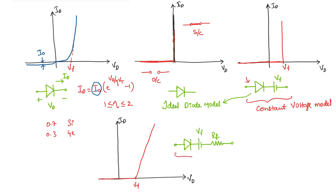This model is called piecewise linear model. So when we started, we started with the ideal diode model and we moved on to constant voltage model and then now you are seeing the piecewise linear model.